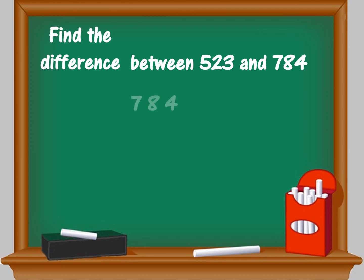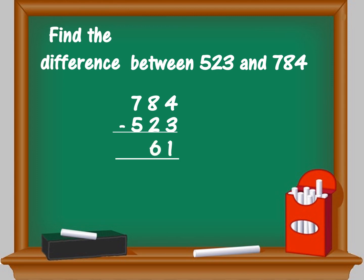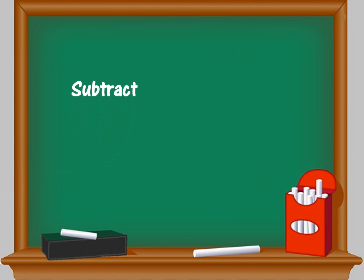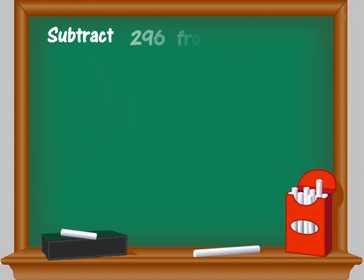Write the minuend 784, minus the subtrahend 523. Now start subtracting: 4 minus 3 is 1, 8 minus 2 is 6, 7 minus 5 is 2. The answer, or the difference, is 261. Next, we will discuss the term 'subtract.'